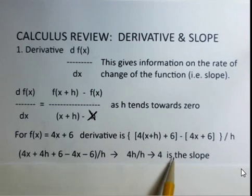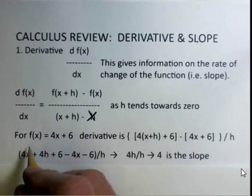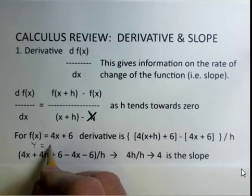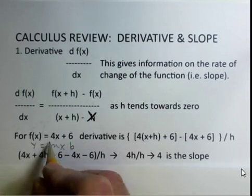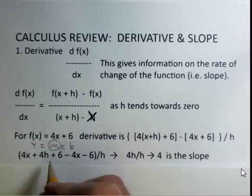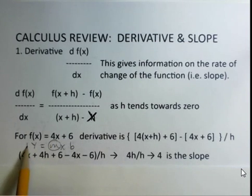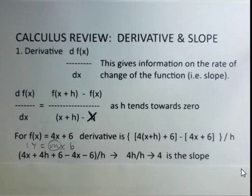4 is the value of the slope, and that's not a surprise. If we compare this to y equals mx plus b, m is the slope. We've got a 1 in front of the y, and 4 is the slope value.